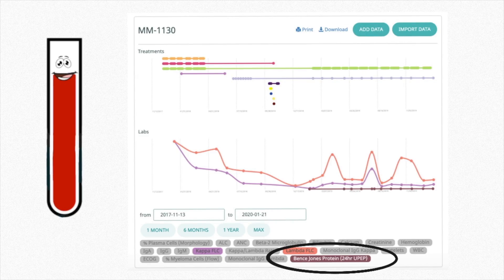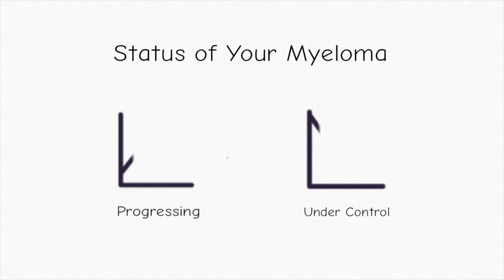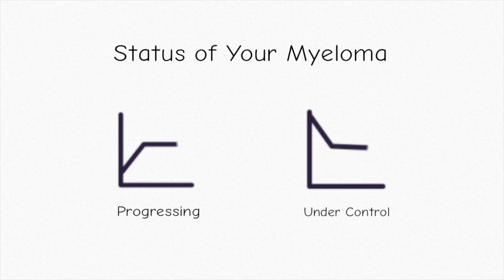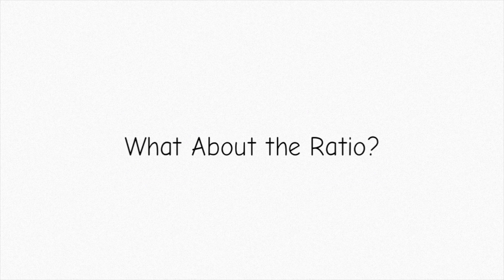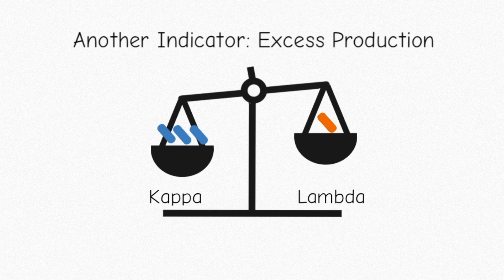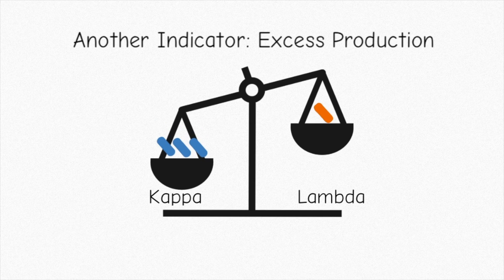These values are also recorded on your All4Cure dashboard. So why does All4Cure collect this data? It helps us understand the status of your myeloma — it helps us see if you're progressing or if your disease is under control. The kappa-lambda ratio is just another indicator of the status of your disease; it tells us about the excess production of one chain over the other.